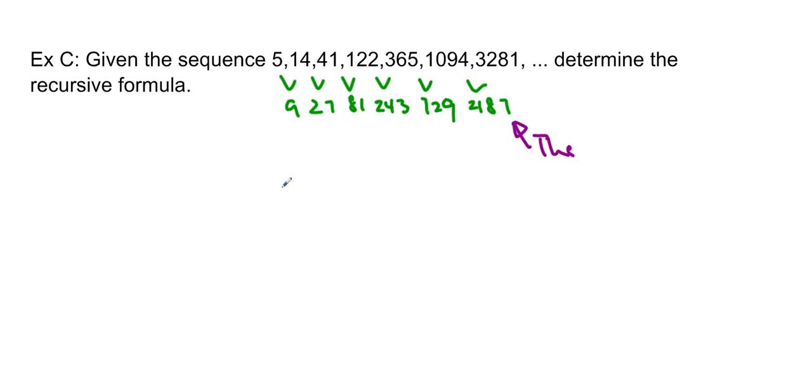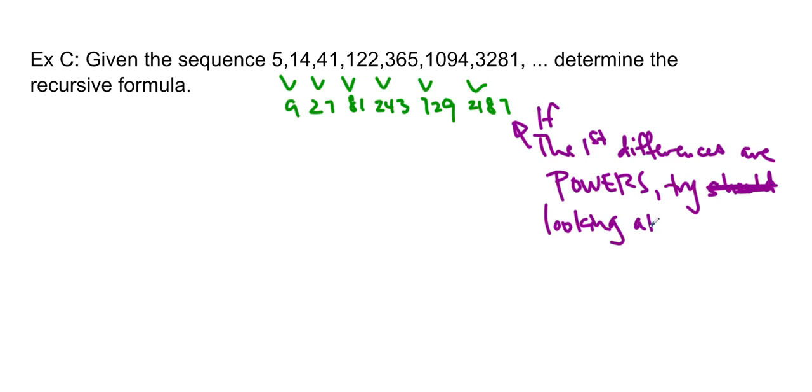I can see that my first differences are actually powers of 3. And that's actually a really important thing to notice. That's not going to help me to find the actual formula, but if they are powers, that actually tells me I should look at the first ratios. So if the first differences are powers, try looking at the first ratios.